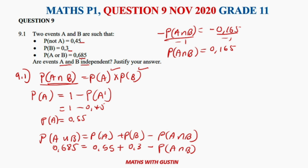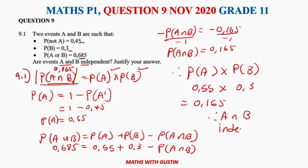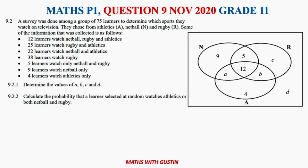Having that in mind, on this equation we already found that P(A and B) is 0.165. Now if we multiply the probability of A (0.55) by the probability of B (0.3), we get 0.165. Therefore A and B are an independent event.